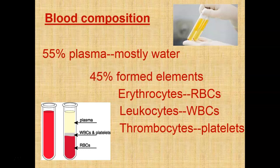Your erythrocytes pick up that oxygen and through your circulatory system take it out to body cells, where it diffuses from where there's more oxygen to where there's less. The oxygen moves from the erythrocytes into body tissues so those tissues can use oxygen to make ATP. When we make ATP we also make CO2 as a waste product, so the blood picks up that CO2 and carries it back; when it circulates through the lungs we get rid of it.